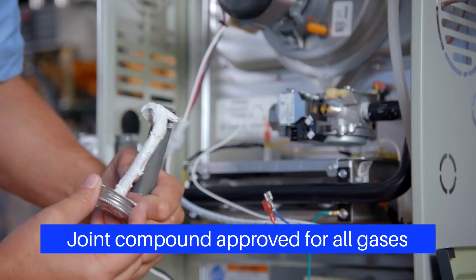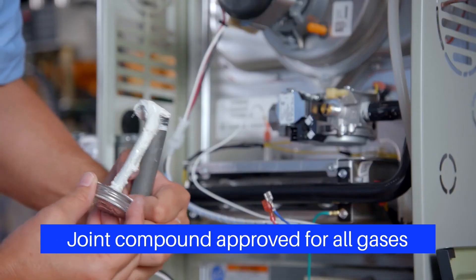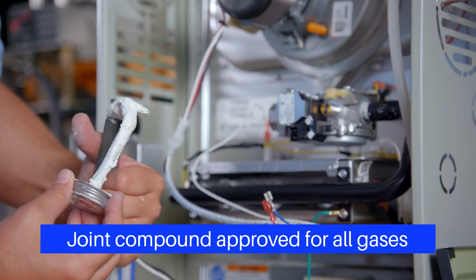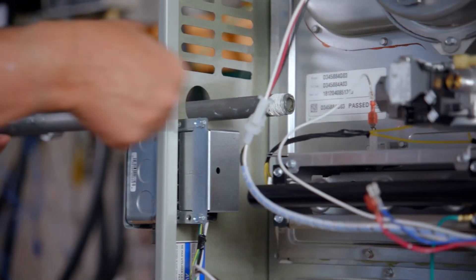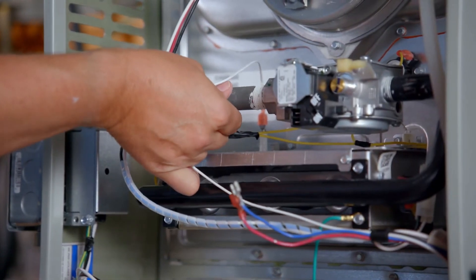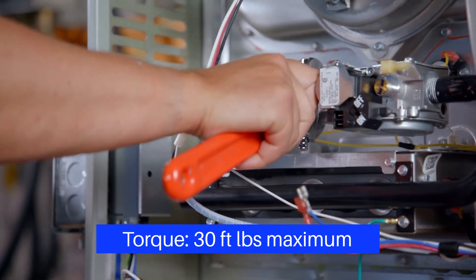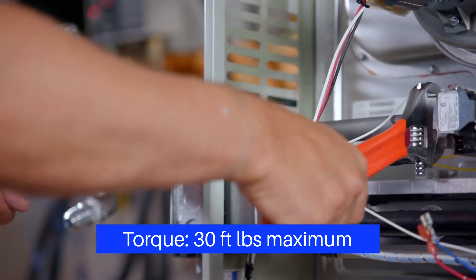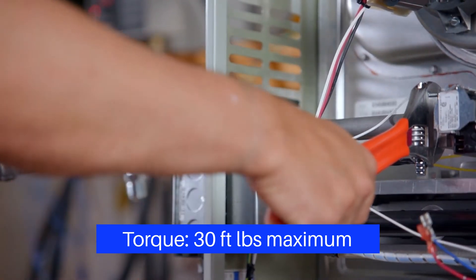Apply pipe joint compound that is approved for all gases only to the male threads of the pipe joints. Do not apply the compound to the first two threads. Hand start the inlet piping, taking care not to cross-thread. Use a vise or open-end wrench to hold the valve while installing piping. Do not tighten excessively, as this may damage the valve.